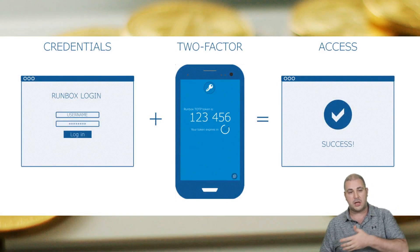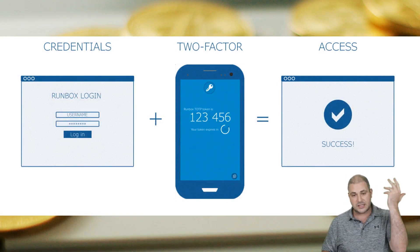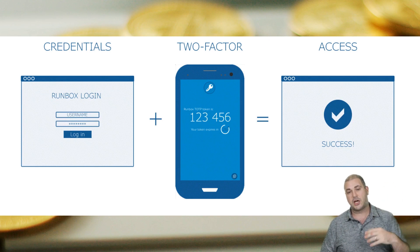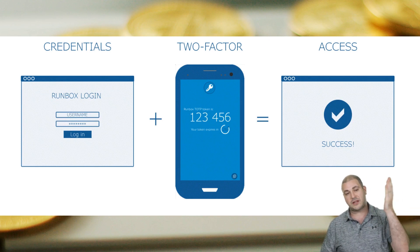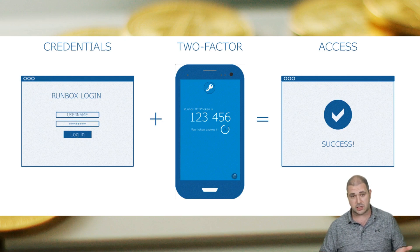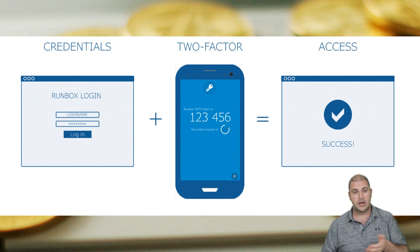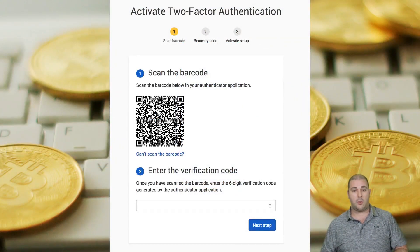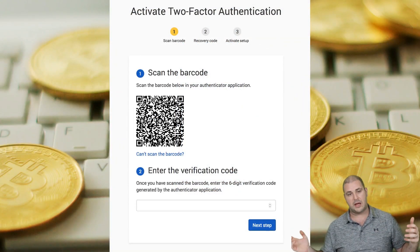This is what it looks like — you log in and this code constantly changes every 30 seconds, as you can see with 26 seconds till it changes. You put the code shown into the exchange account and it lets you in. If you put the wrong code it'll say wrong number — after 30 seconds the number changes and you put the new one in.